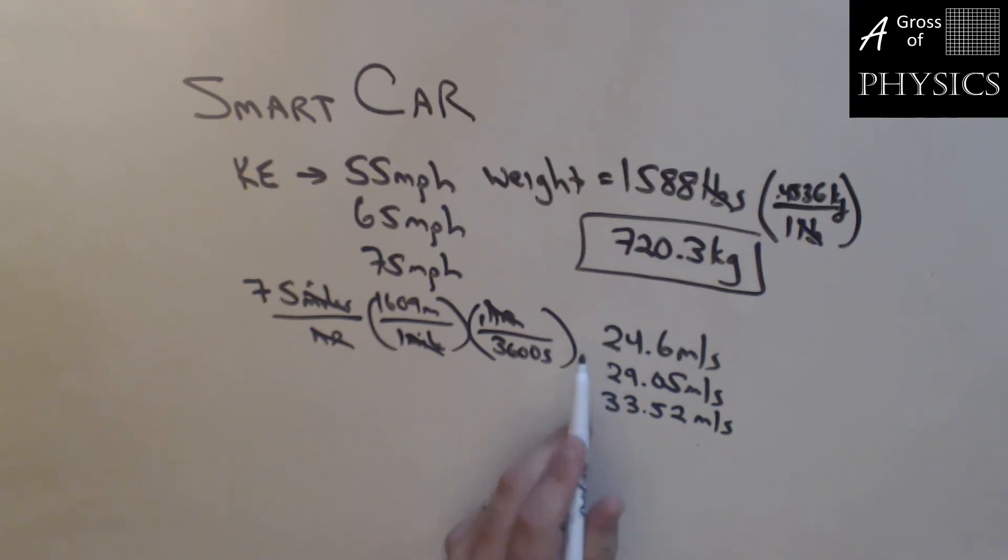In each case we have the mass and we have the velocity. So kinetic energy equals one half mv squared. KE equals one half times 720.3 kilograms times 24.6 meters per second. The biggest mistake that people make is they forget to square the entire unit. If you don't have the parentheses and you write the squared close to the seconds, it might look like an acceleration unit. Make sure you put that in parentheses and square that number.